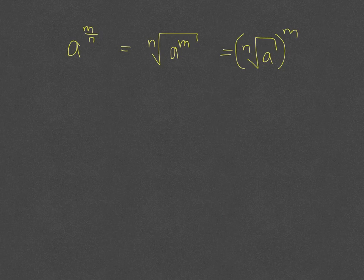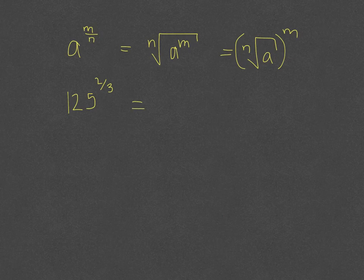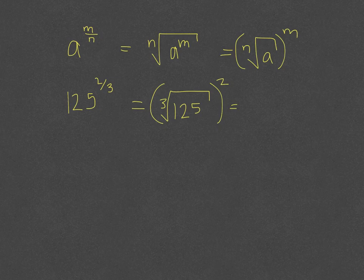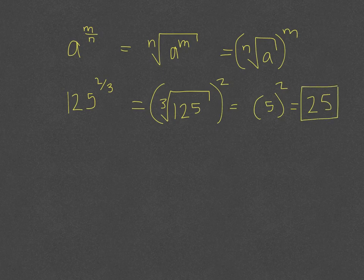For example, 125 to the 2/3 power becomes the cube root of 125, all to the second power. The cube root of 125 is 5, and then 5 squared equals 25. So that expression simplifies to 25.